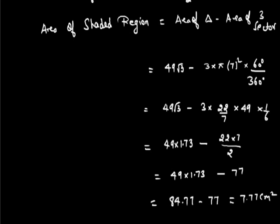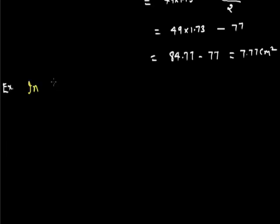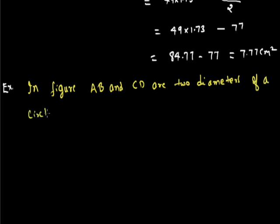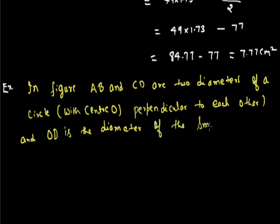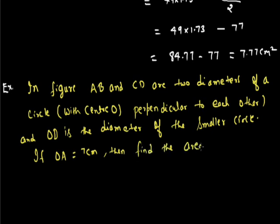Next problem: in the figure, AB and CD are two diameters of a circle with centre O, perpendicular to each other, and OD is the diameter of a small circle. If OA equals 7 cm, then find the area of the shaded region.